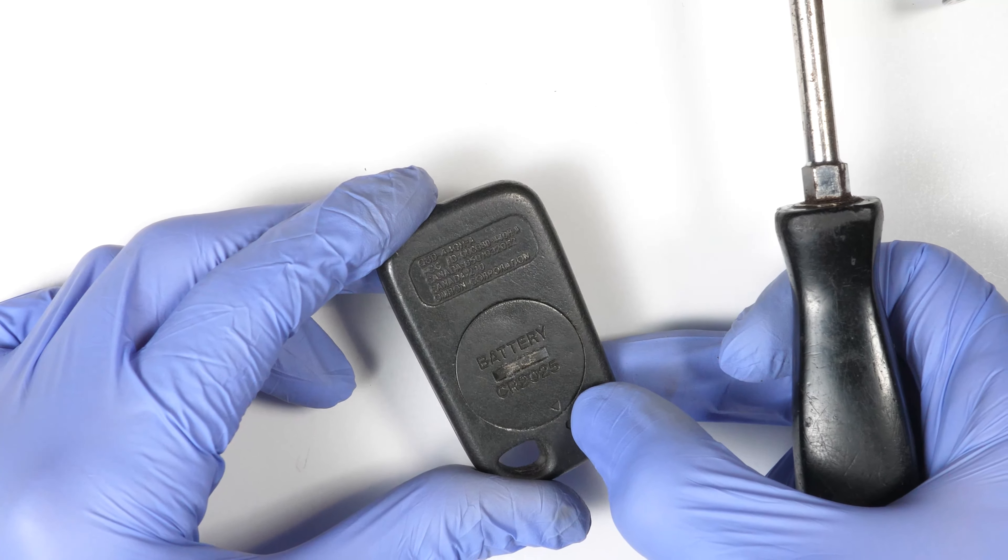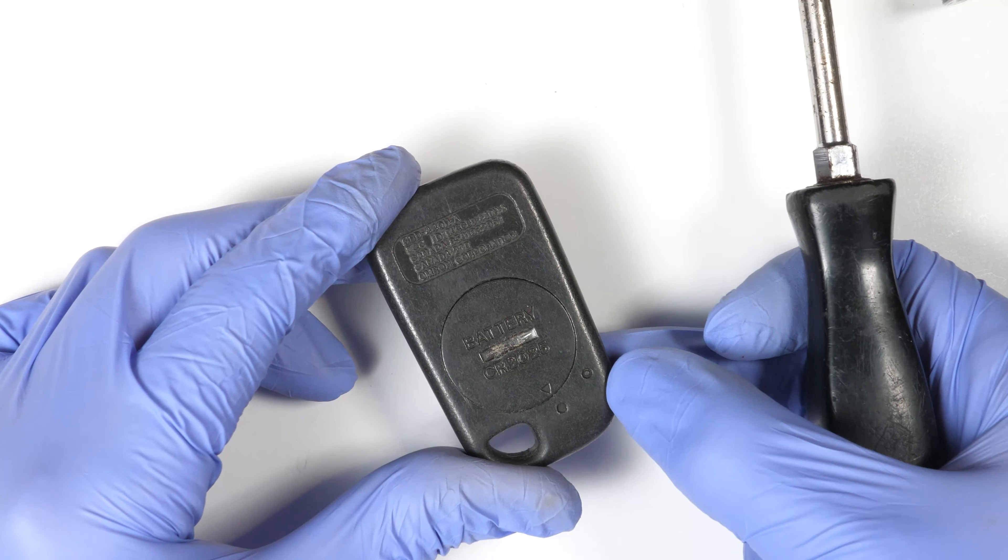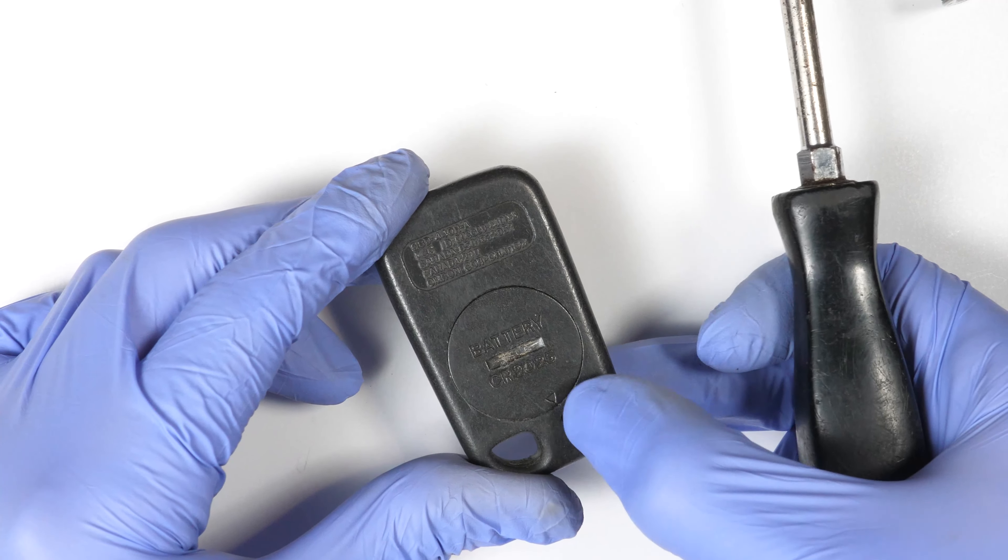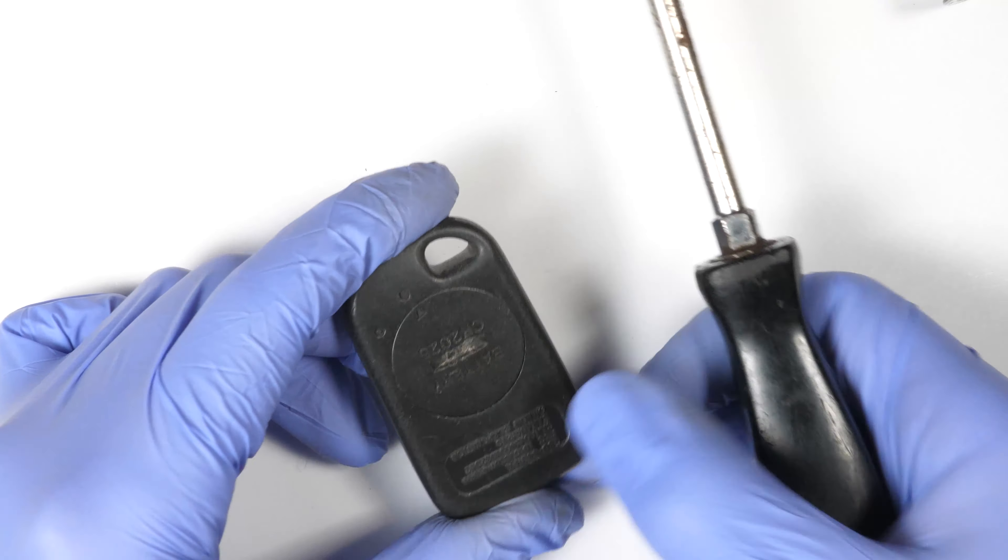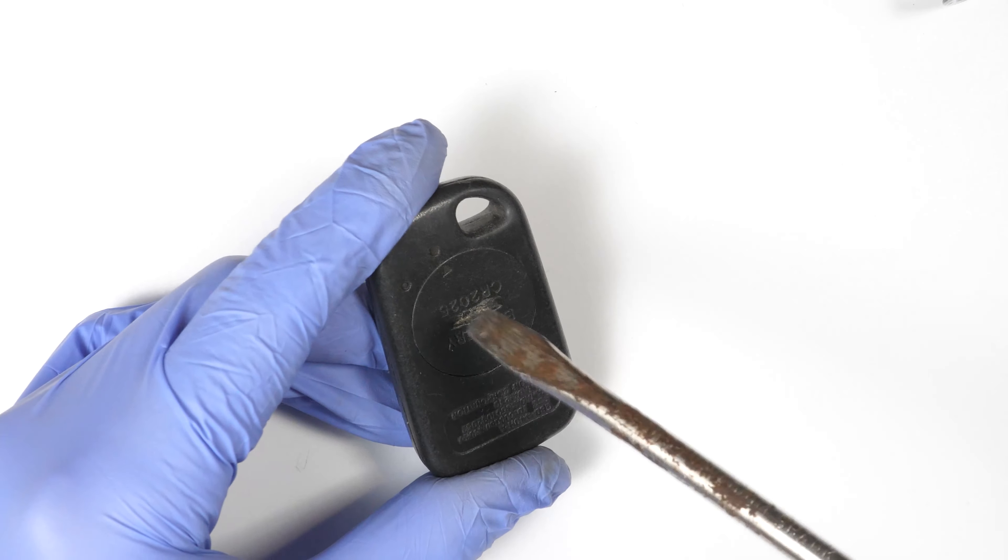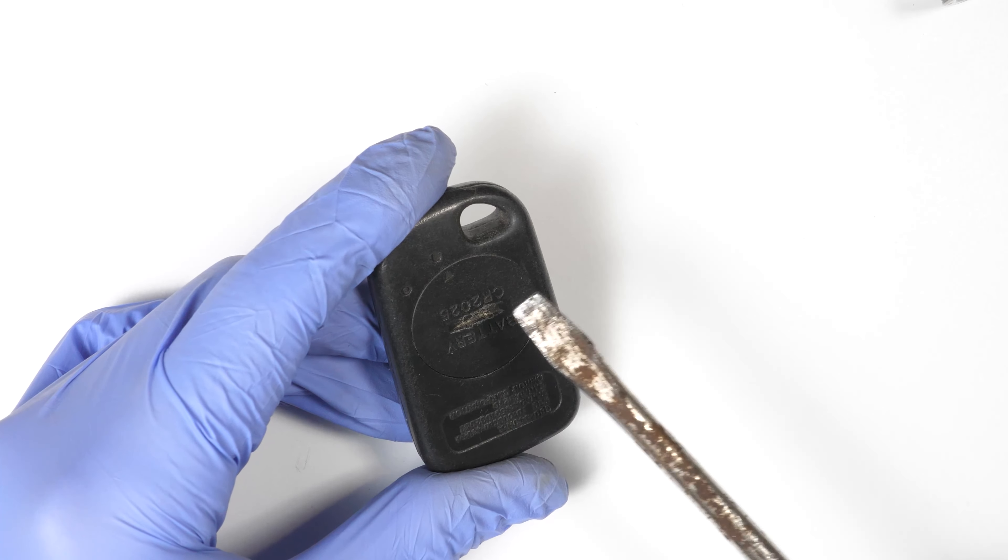If you notice, there is an arrow pointing to a circle here and there's another circle here. We need to bring this arrow to the other one to open the battery compartment. You'll take a flathead screwdriver or maybe a coin, something flat.